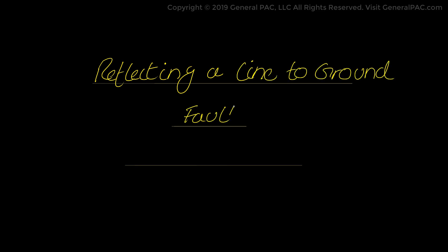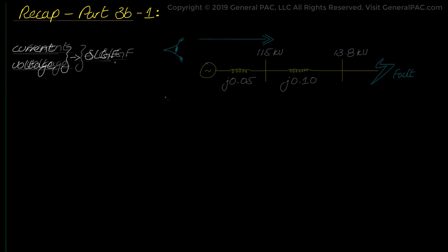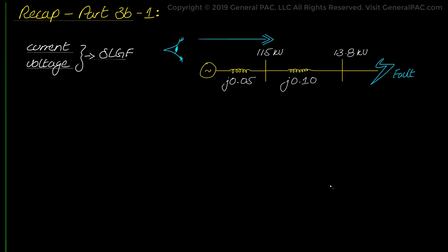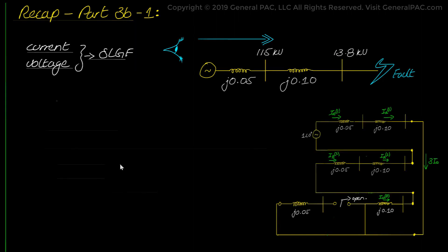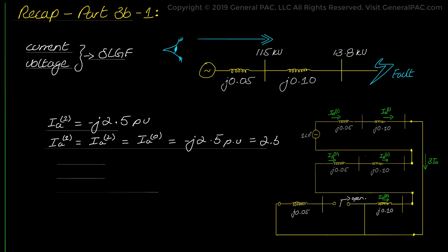Reflecting a line-to-ground fault on the high-voltage side. In this video we will see how we can reflect a line-to-ground fault current value which occurs on the low-voltage side of the transformer but reflected on the high-voltage side. Let's first have a recap of part 3b-1, in which we calculated the fault current and voltage values for a single line-to-ground fault that occurs on the 13.8 kV bus or the low-voltage side of the transformer. For a one-line-to-ground fault type, we found that the positive sequence current was equal to negative j2.5 per unit, and the positive sequence current equaled the negative sequence current which also equaled the zero sequence current, again at negative j2.5 per unit. That can be expressed as 2.5 angle negative 90 in polar form.